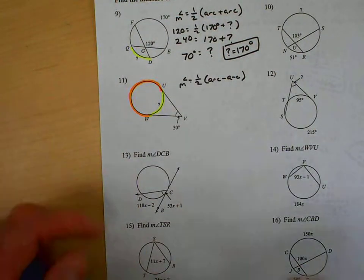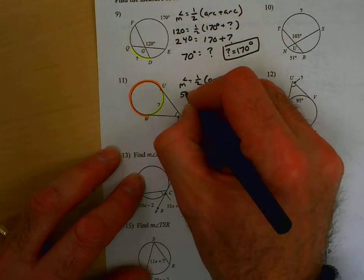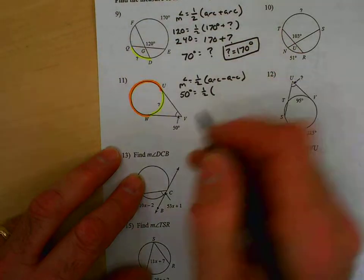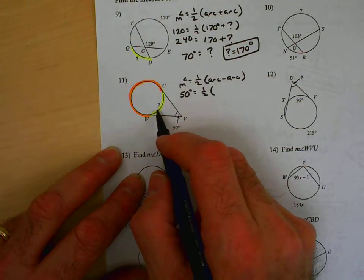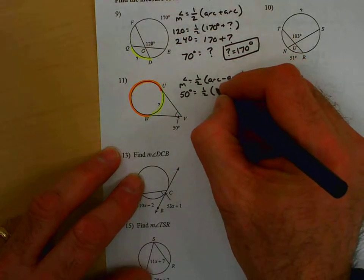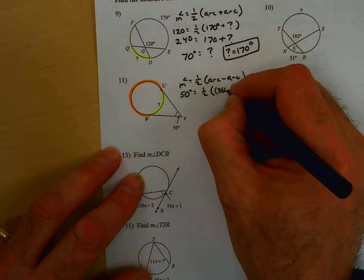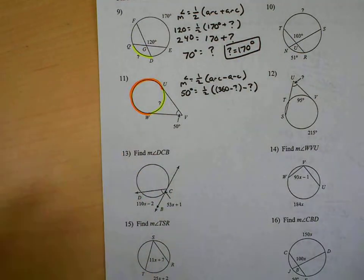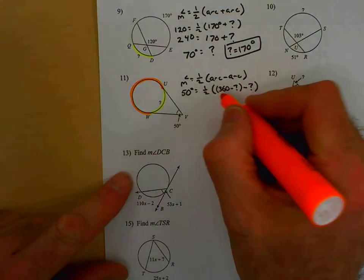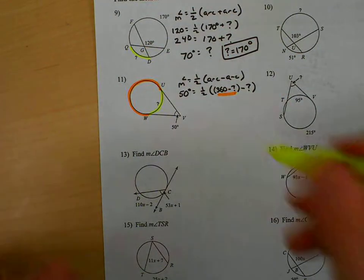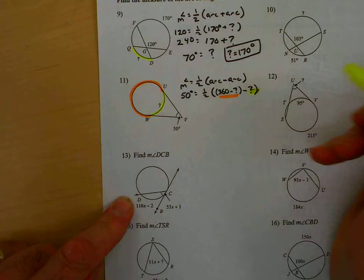Now, substitute in what we know. 50 degrees equals one half. Now, this is my question mark. This is 360 minus my question mark. So, I'm going to say 360 minus the question mark minus question mark. This being the orange measure of the arc. And this being the yellow measure of the arc.